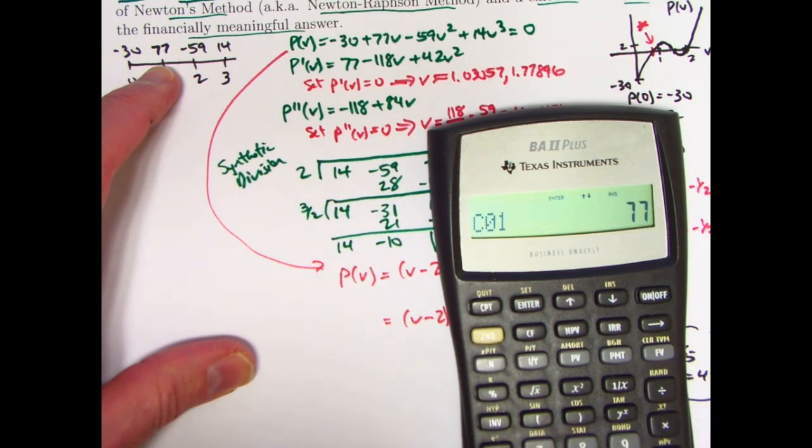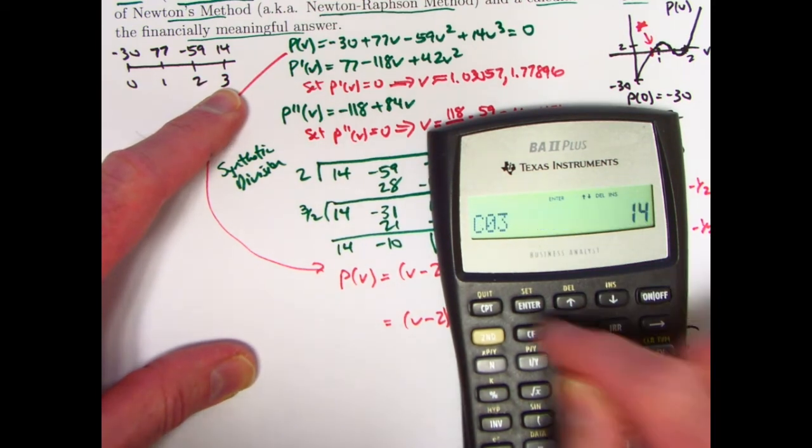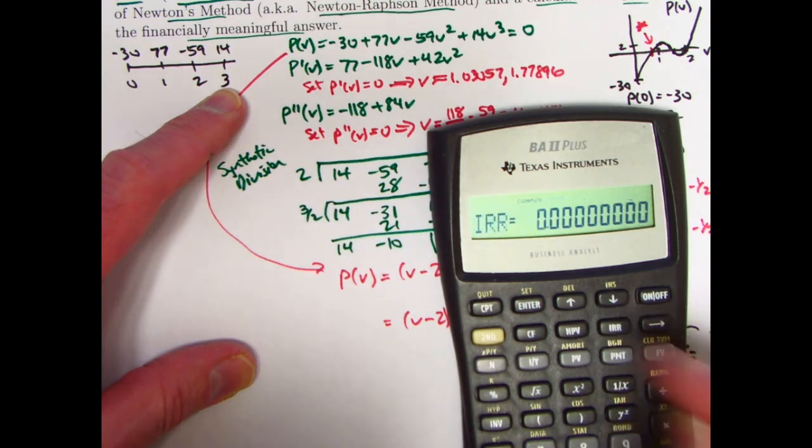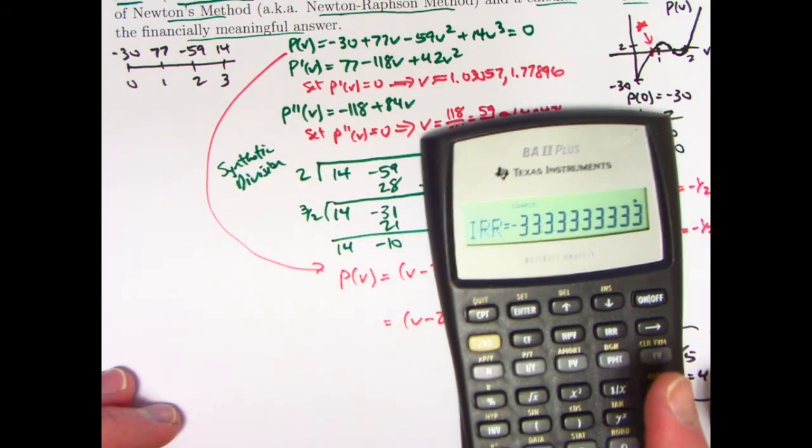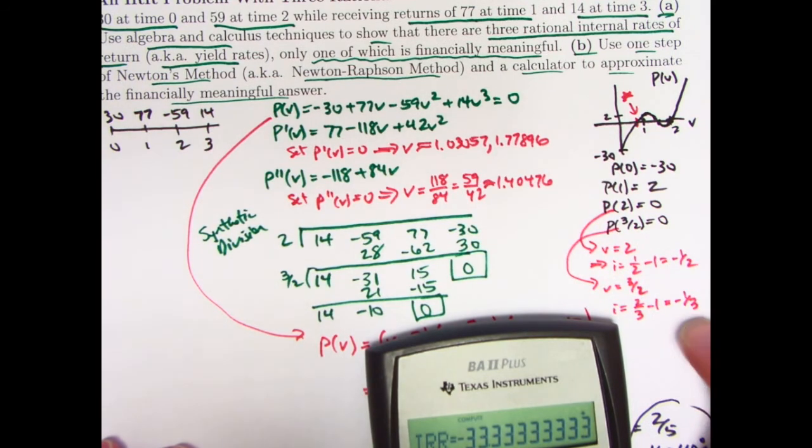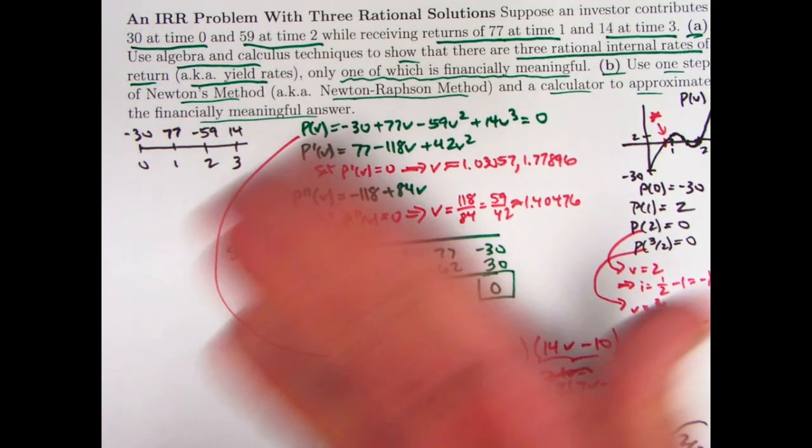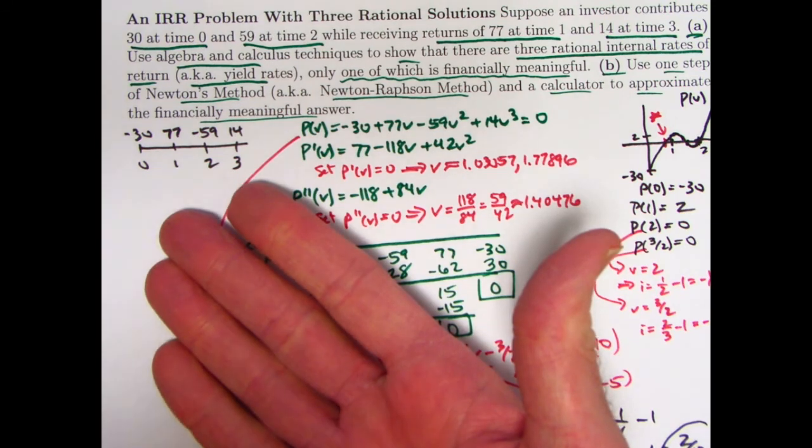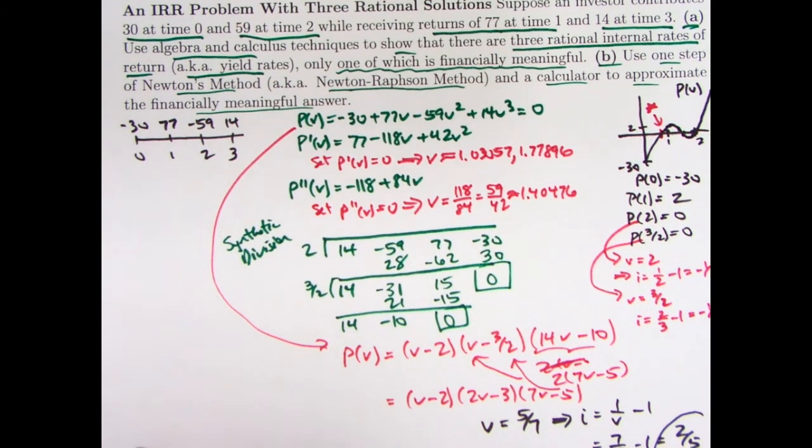So the other root is going to be 10 fourteenths or 5 sevenths. You can also think of this as 2 times 7v minus 5 and bring the 2 through here. So another way to factor this is as v minus 2 times 2v minus 3 times 7v minus 5. The third root that is the financially meaningful one is v equals 5 sevenths, just less than 1, which corresponds to i equals 1 over v minus 1 is 7 fifths minus 1 is 2 fifths, 0.4 or 40 percent. That is the answer for the one that is financially meaningful.